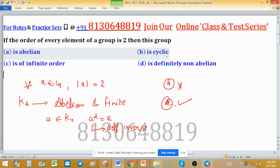Option b is cyclic. K4 is not cyclic, so b is discarded here. Is of infinite order? This is false because K4 has finite order.